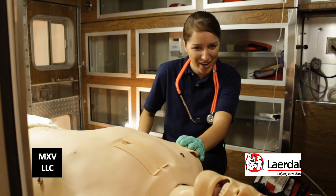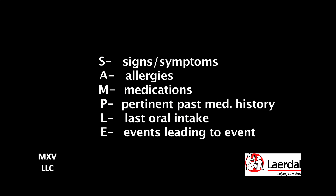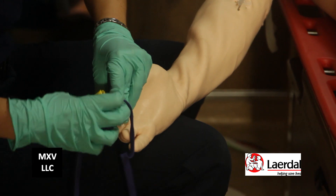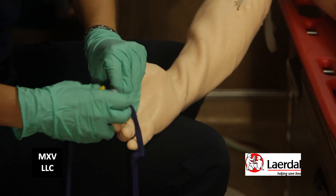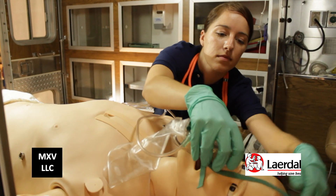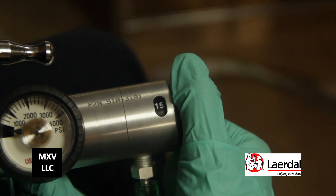She questions the patient about the history of present illness and also starts obtaining the patient's SAMPLE history. Recognizing the patient may be experiencing a cardiac event, she places a pulse ox and places her on oxygen at 15 liters per minute.